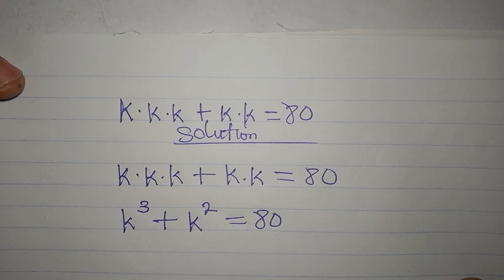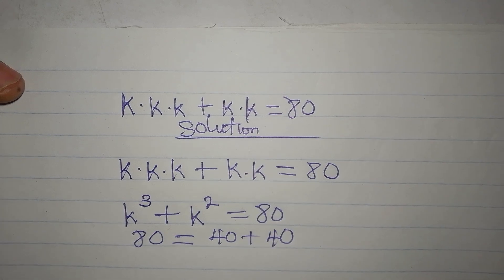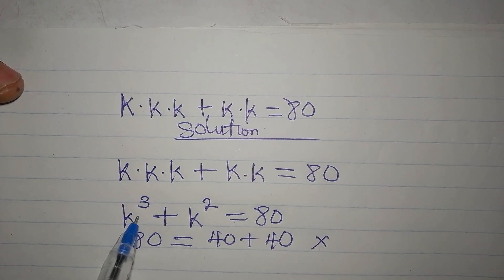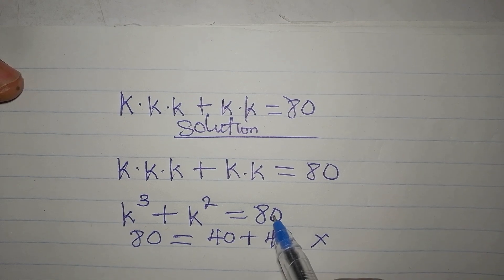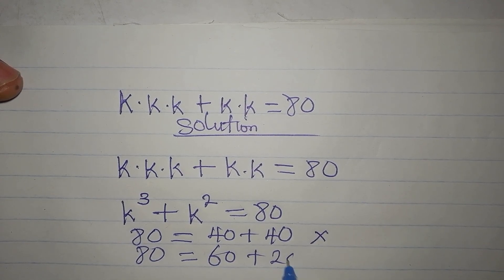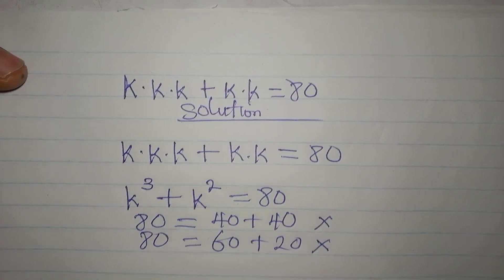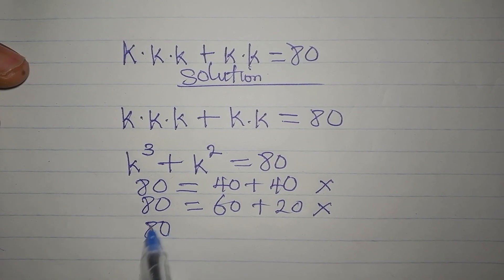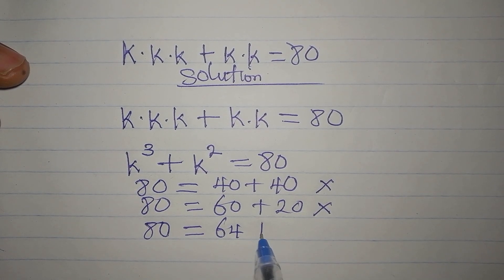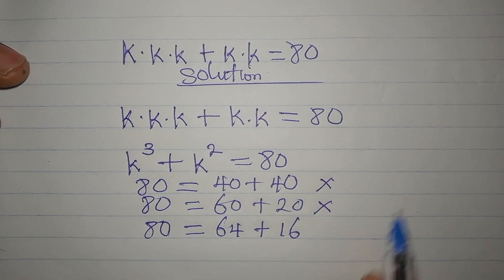Now, looking at 80, it could be 40 + 40, but that won't work — it can't be written in the required form. It could also be 60 + 20, but 60 can't be expressed in this form either. So let's try again: 80 can be 64 + 16. Now 64 is 4 to the power of 3 and 16 is 4 to the power of 2, so this is going to work.